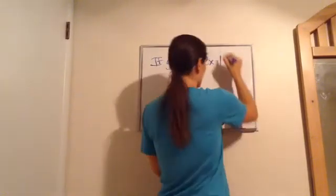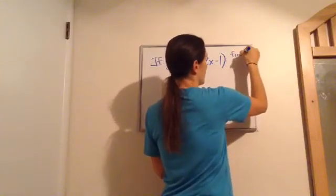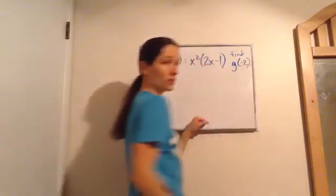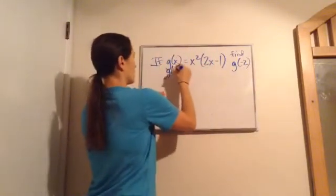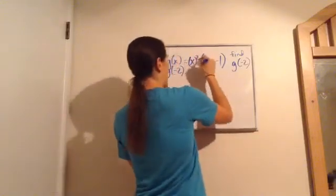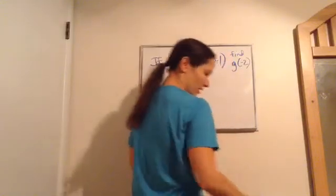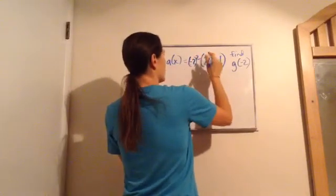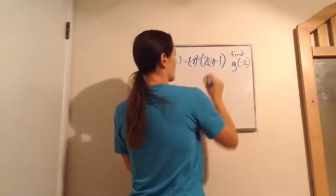So for example, if, here's how it's exactly said. If G of X is X squared times 2X minus 1, then it says this. Find G of negative 2. Well, G of negative 2, what does that tell us X is? It's negative 2.